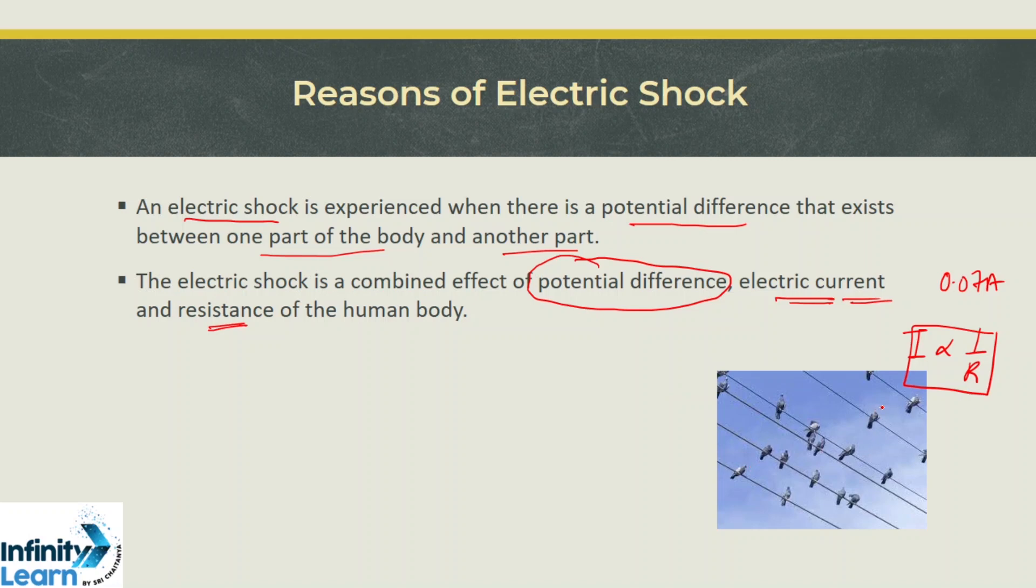Now these birds, if you observe, they are sitting on a single wire which is having a single potential. So both their legs are having single potential, same potential. There is no potential difference that exists and therefore no current flows through them.